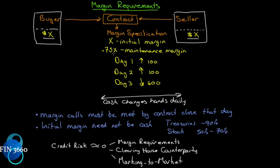0.75X — whatever X is, take three quarters of it. That's called the maintenance margin. So if the value of the account drops and eventually hits 0.75X, then they have to bring the margin back up to the initial margin. They have to deposit some funds into their account to bring it back up to the initial margin.